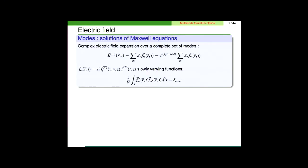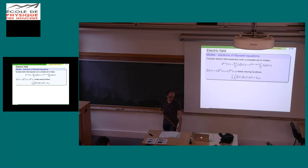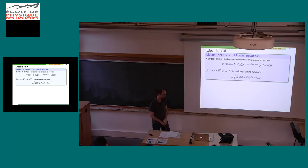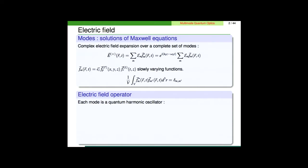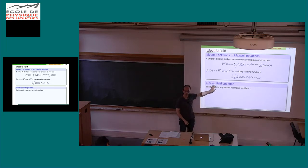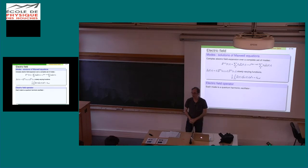You want these modes to be orthogonal, so you just define orthogonal relations. That's the classical field. Modes is a purely classical concept — it comes simply from Maxwell's equations. When you go to the quantum part, you say that each mode is a quantum harmonic oscillator. I don't do the derivation here; I just use the analogy. Each mode of the electromagnetic field is a quantum harmonic oscillator. They are independent, so the energy of the field is the sum of all the energy over all modes, and I can treat them independently.